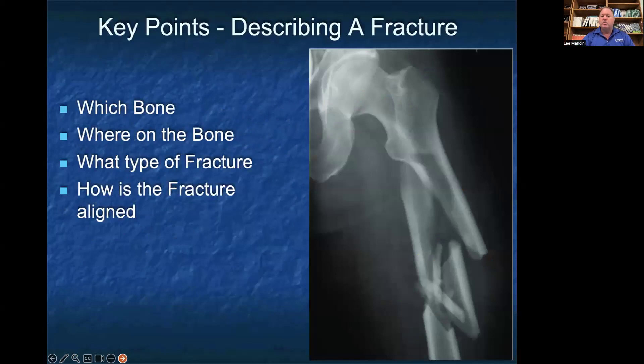Key points in describing a fracture: you need to make sure you correctly describe which bone is involved, where on the bone — is it the mid-shaft, is it distal, is it proximal — what type of fracture, and then how is the fracture aligned?